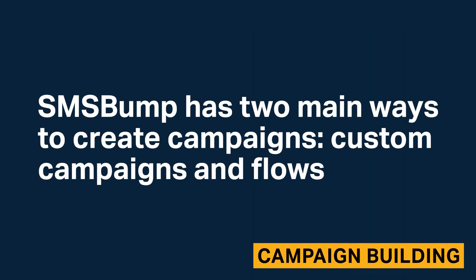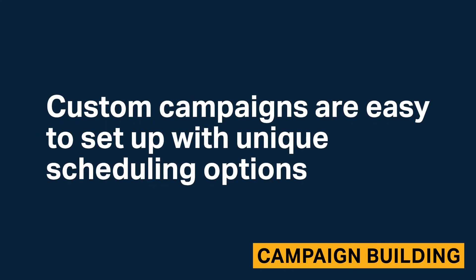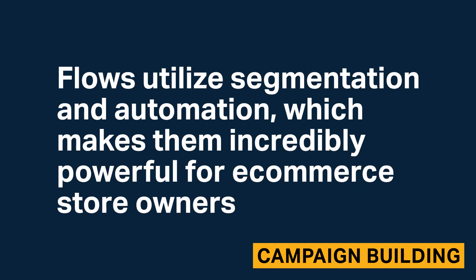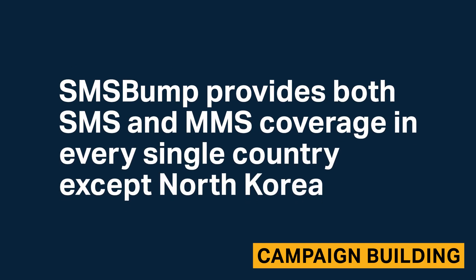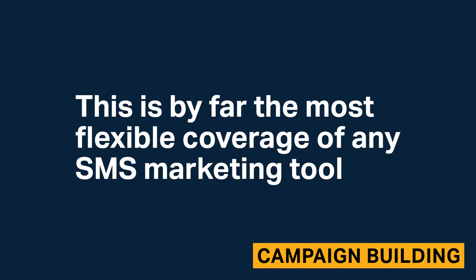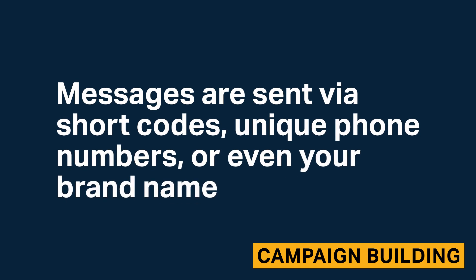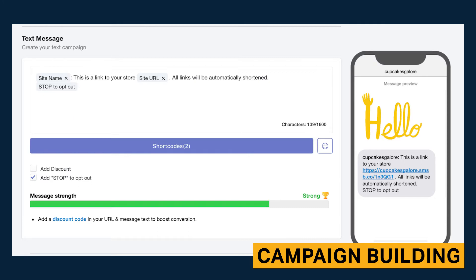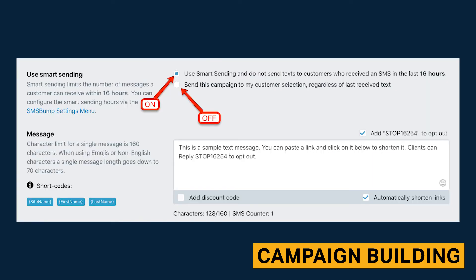SMS Bump has two main ways to create campaigns: custom campaigns and flows. Custom campaigns are easy to set up with unique scheduling options, and flows utilize segmentation and automation, making them incredibly powerful for e-commerce store owners. SMS Bump provides both SMS and MMS coverage in every single country except North Korea — by far the most flexible coverage of any SMS marketing tool. Messages are sent via short codes, unique phone numbers, or even your brand name. Unique campaign features include custom UTM codes for Google Analytics tracking, Giphy and Pexels integration for MMS, and custom discount code generators. Scheduling options are more advanced than other platforms — in addition to normal scheduling, SMS Bump provides smart sending, which enables a 16-to-20-hour interval between texts sent to subscribers to help prevent spam. This time interval can be changed in the settings.